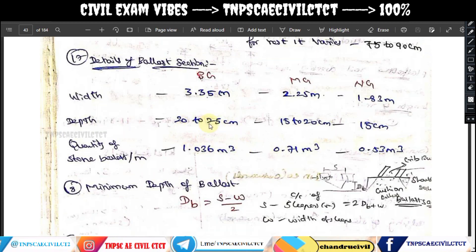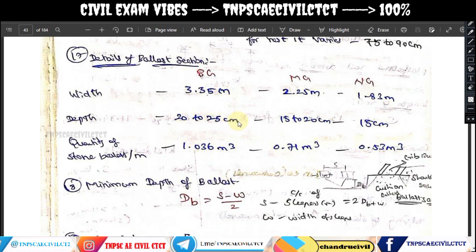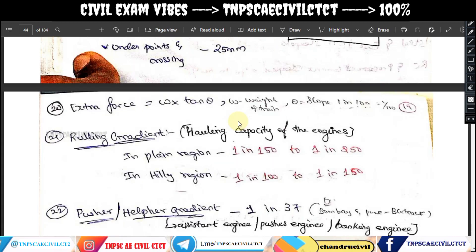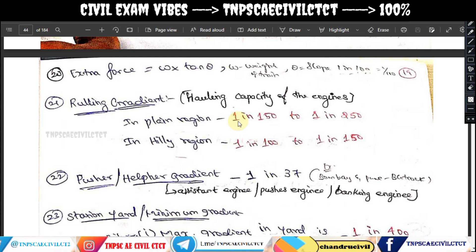The minimum general depth of ballast is 25 cm. Next, we use extra force with the basic slope formula: extra force equals W into tan theta. We use a slope of 1 in 100.